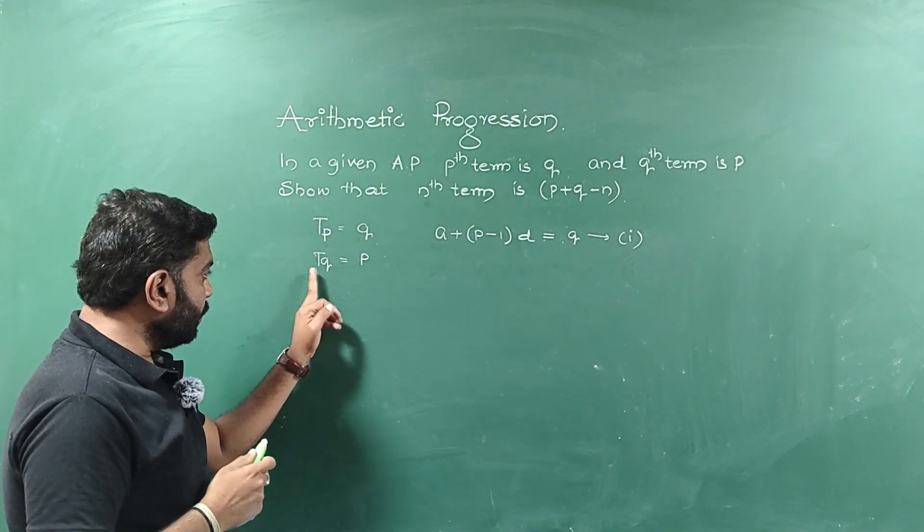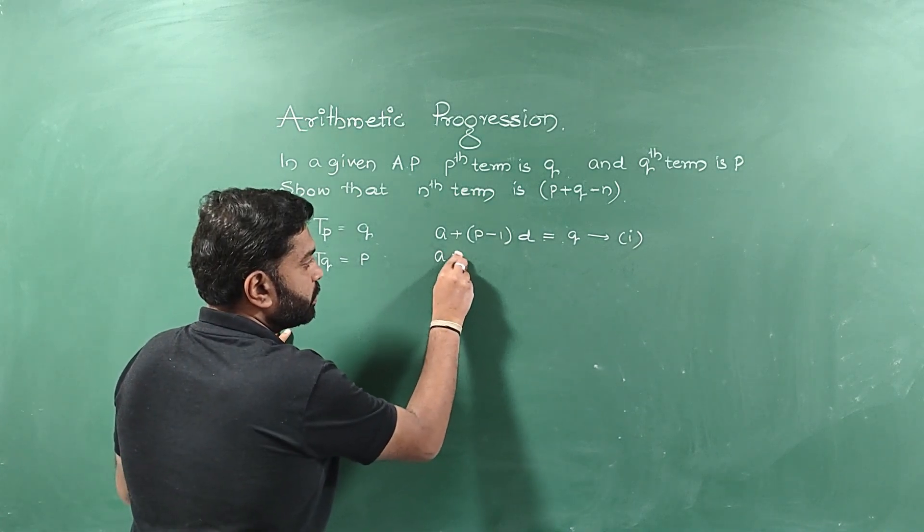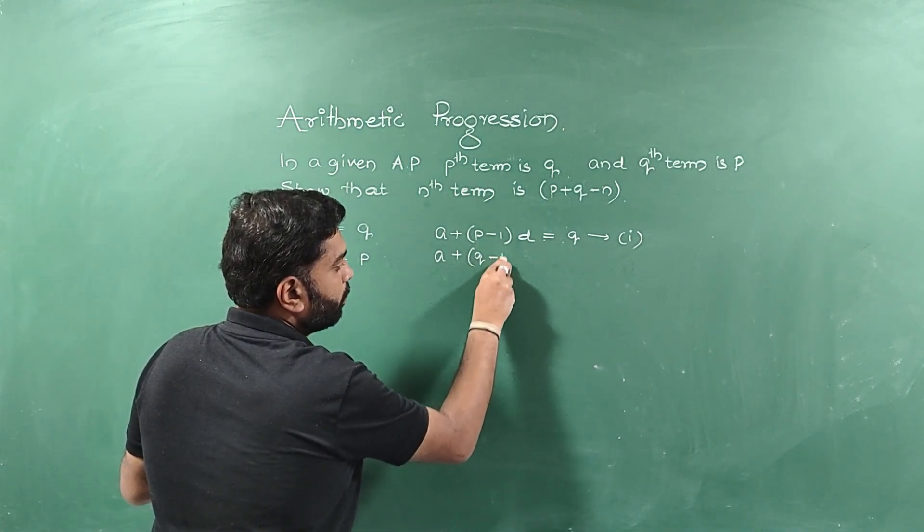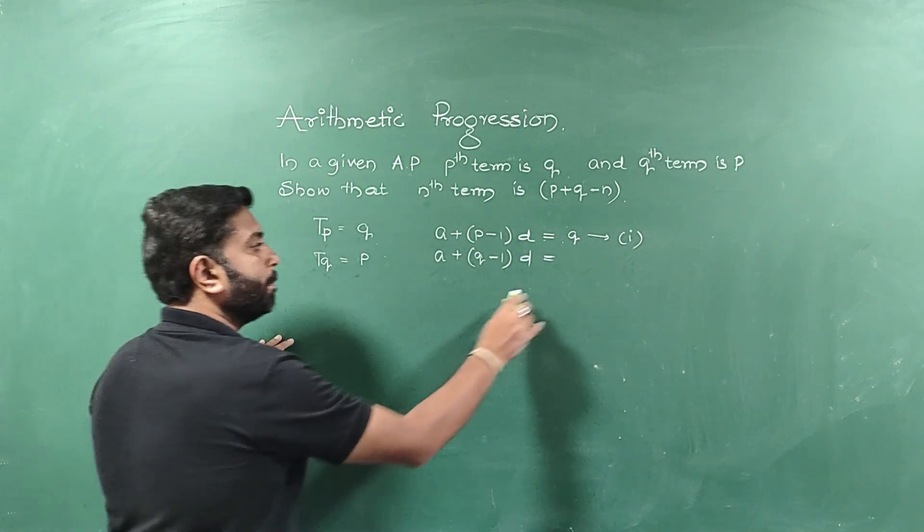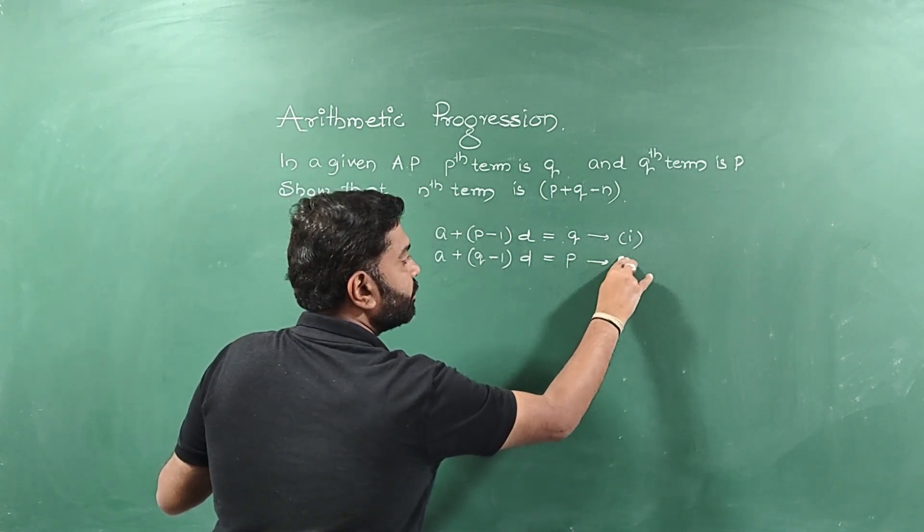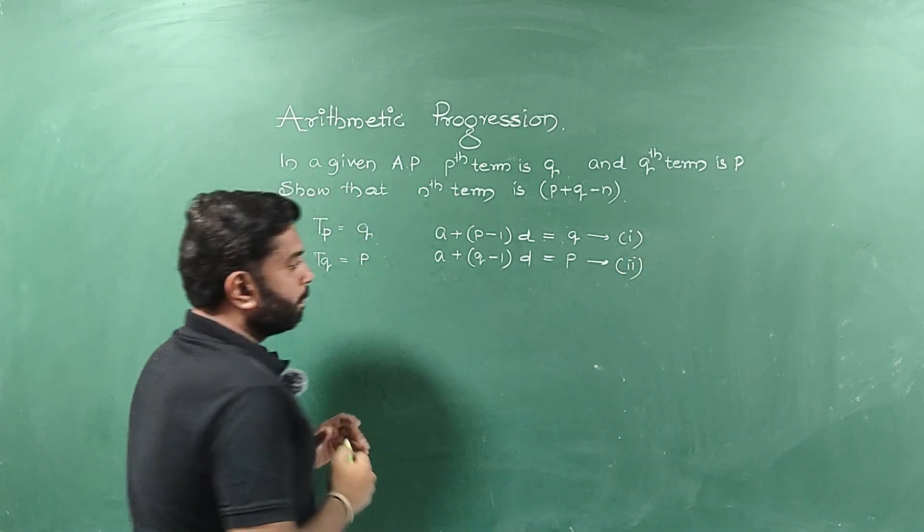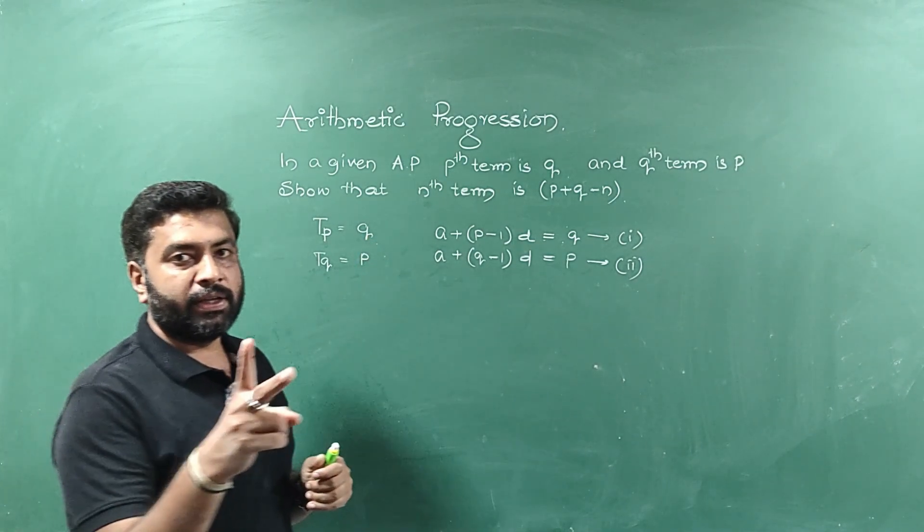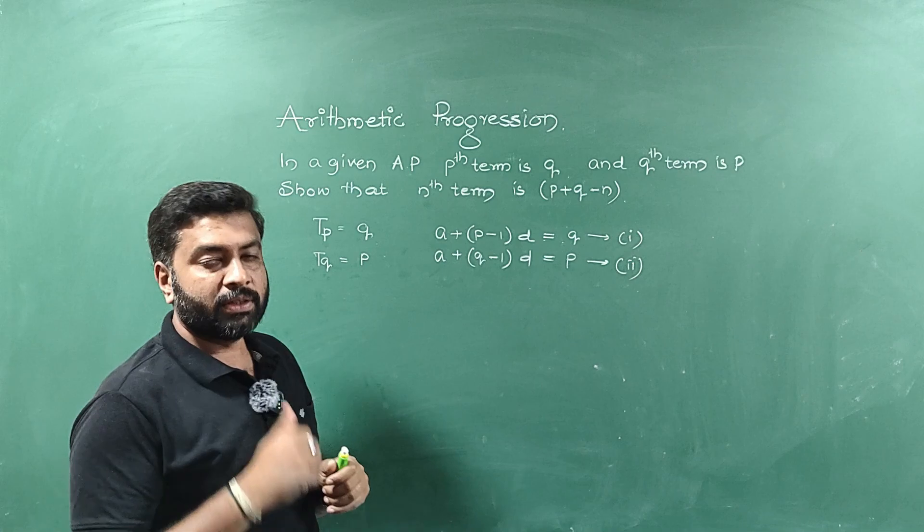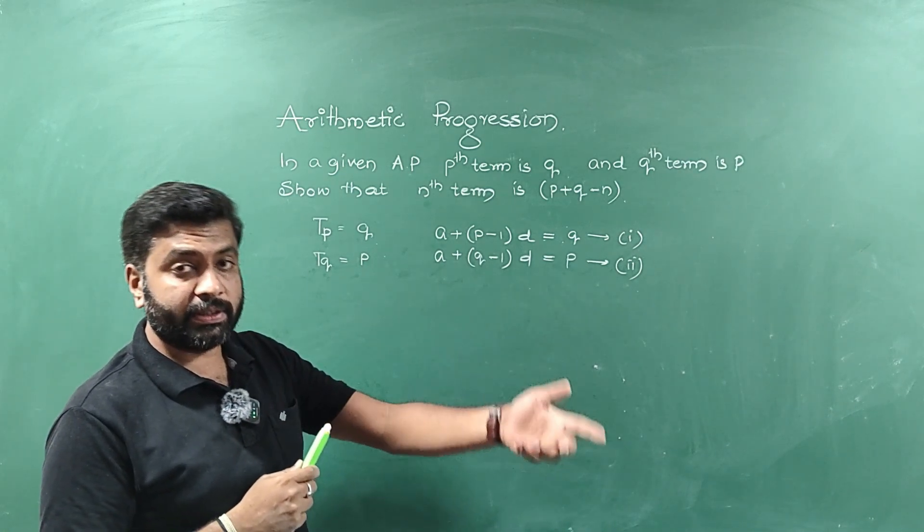Next, Tq means Qth term. A plus, can I write, Q minus 1 into D is equal to P. I will call it as equation number 2. I hope you can recall, these are nothing but pair of linear equations in two variables. There are two variables. One is A and another one is D.